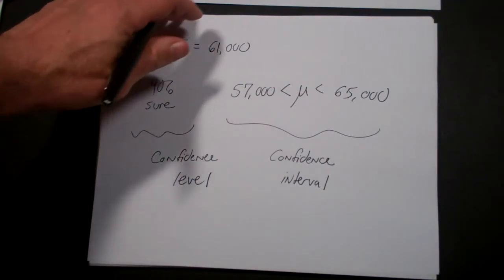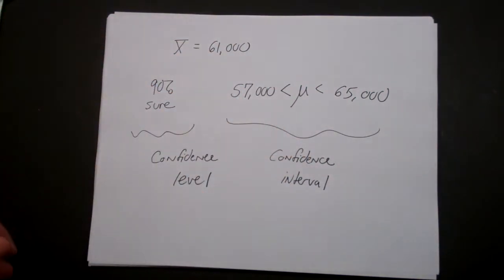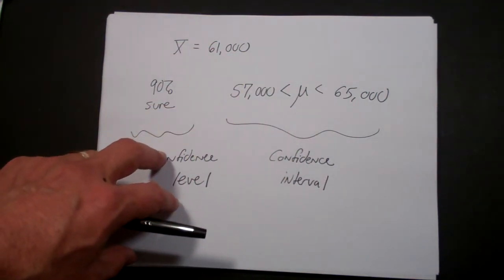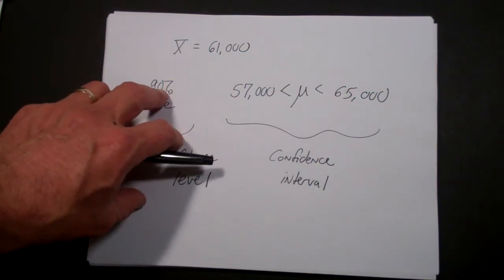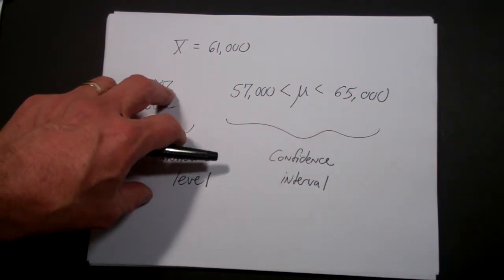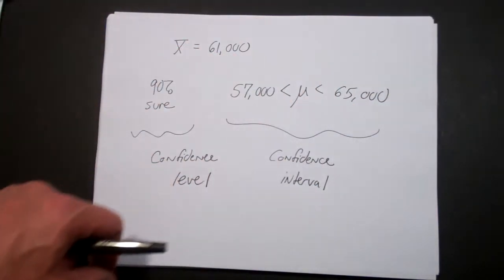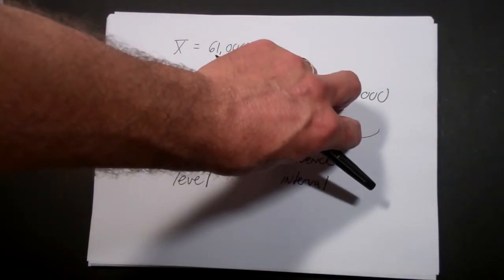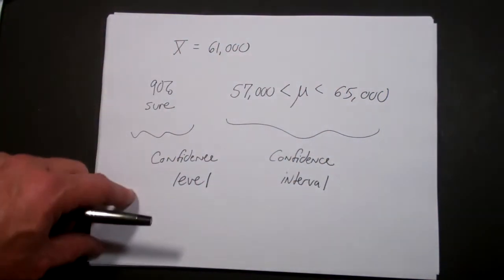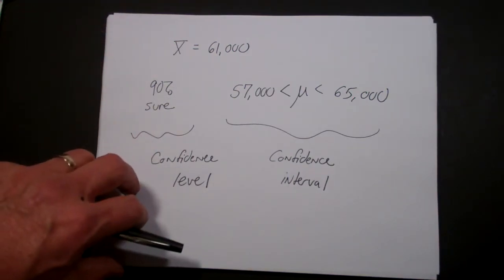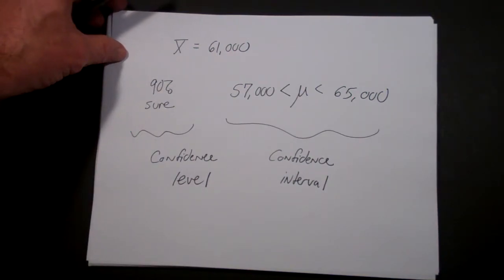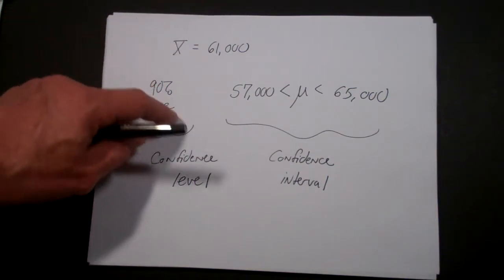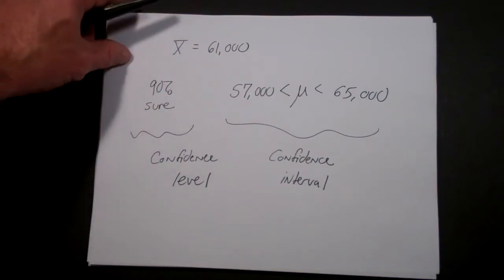These two things are different concepts, but they're interrelated. Because if you want the confidence level to go up, then you have to spread out the confidence interval. If you narrow the confidence interval, you're less sure that the true value actually falls there, so the confidence level would go down. Having said that, let's look more closely at what exactly we mean by confidence level.